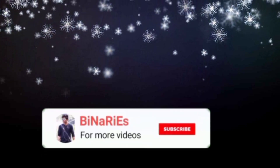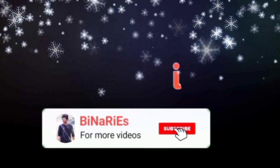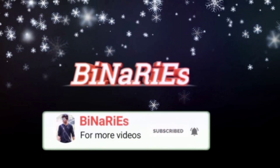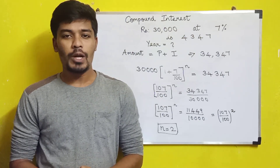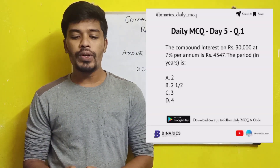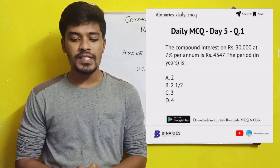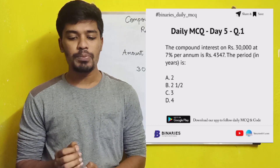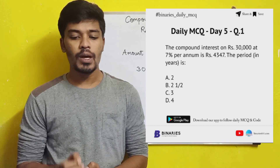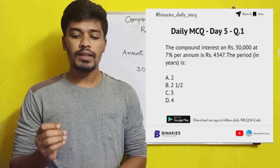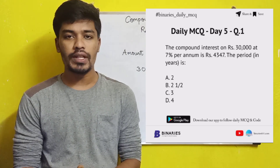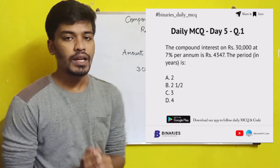Let's go to the next video. The first question: the compound interest on Rs.30,000 at 7% per annum is Rs.4,347. The period in years is?